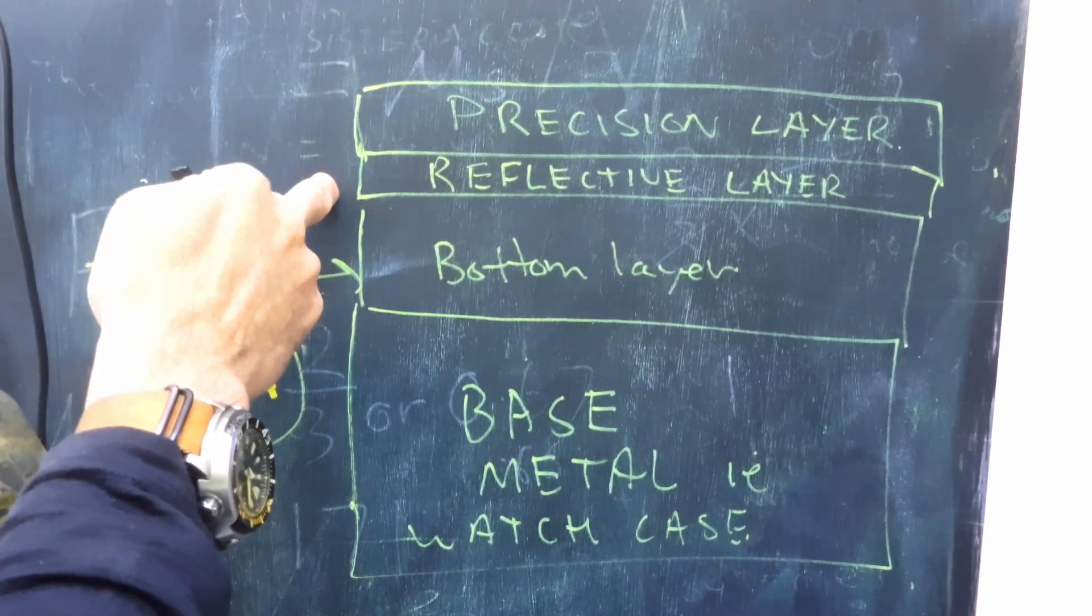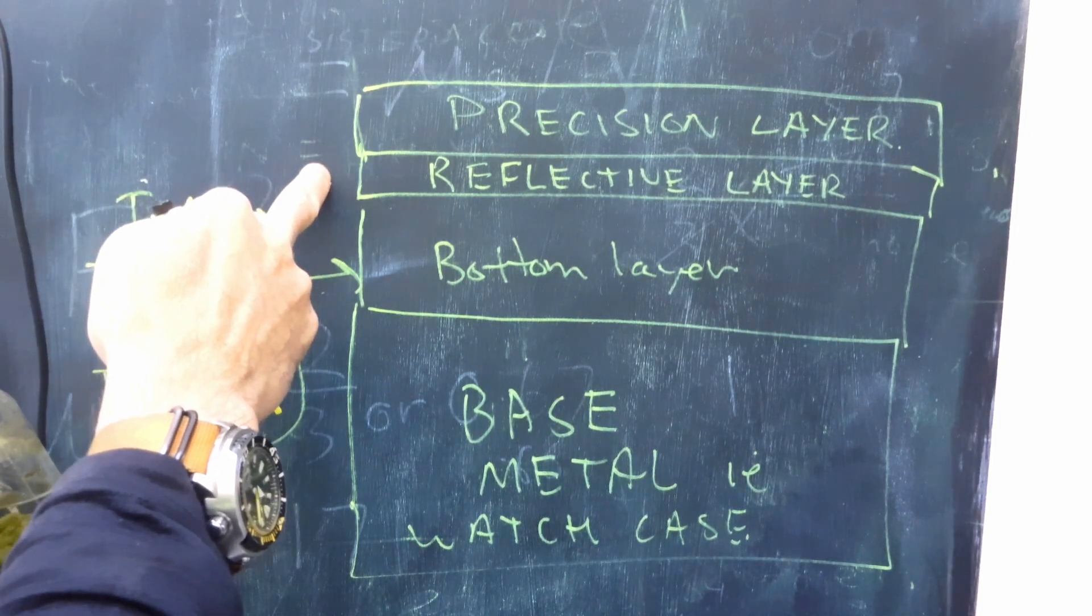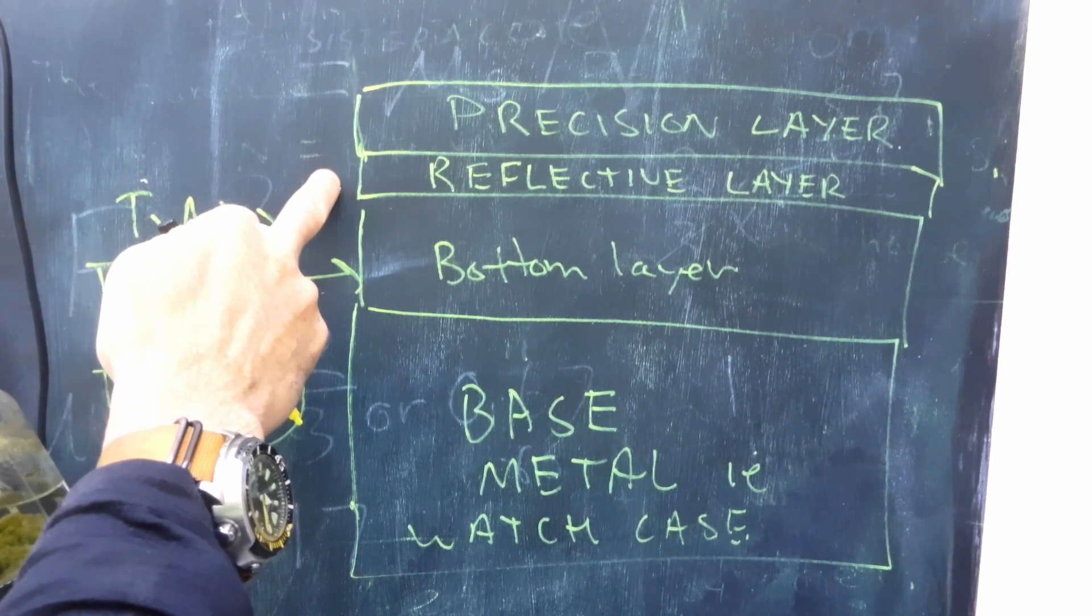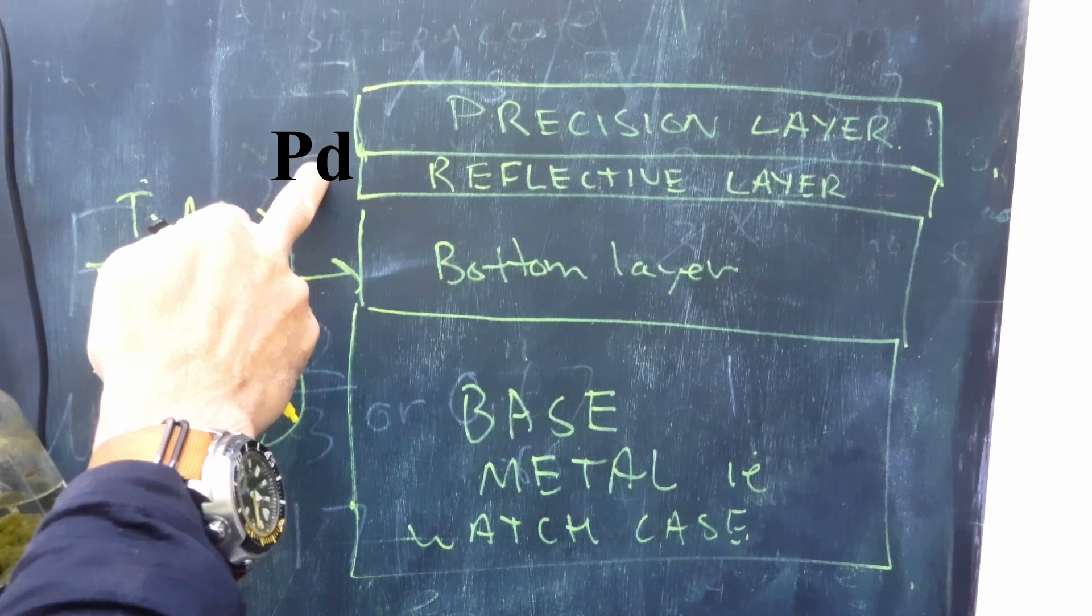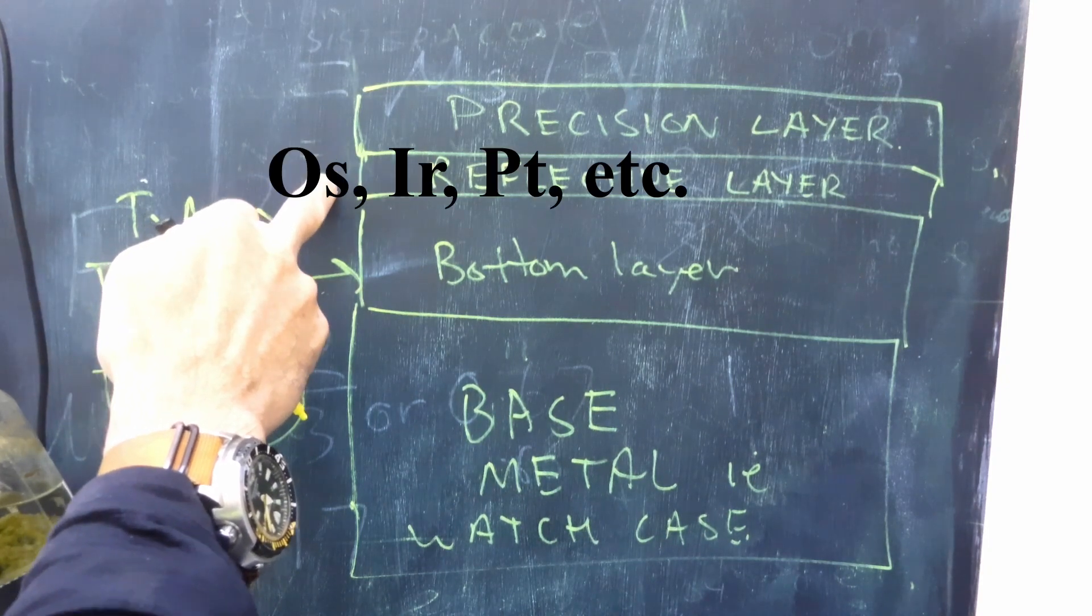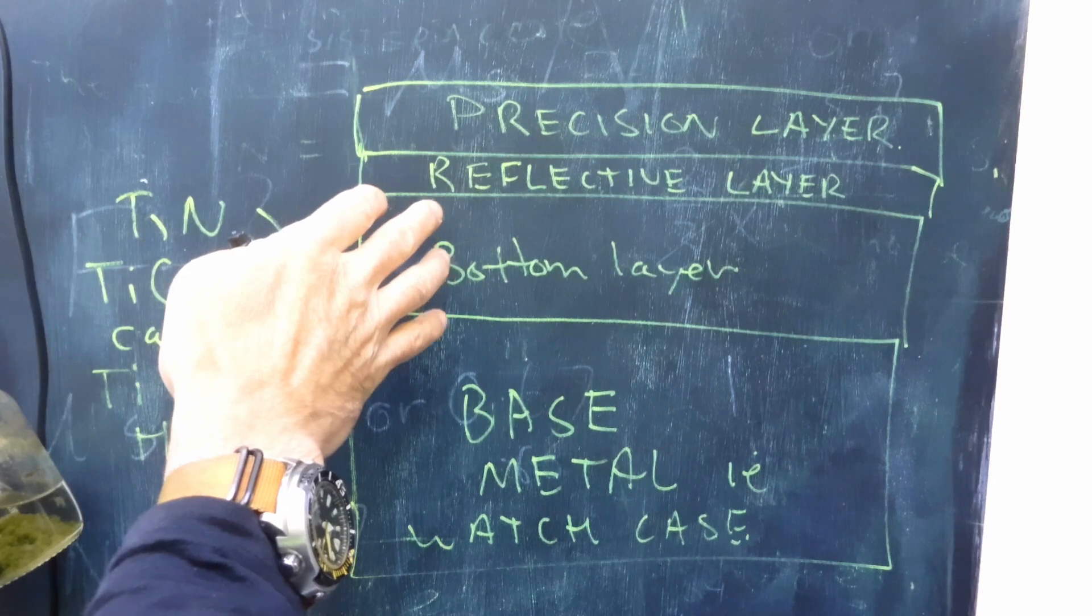That will enhance this layer, and the reflective layer is primarily composed of metals such as ruthenium, palladium, silver, osmium, iridium, platinum, etc., and those metals will reflect this gold look.